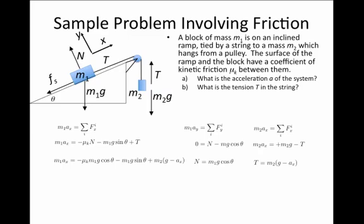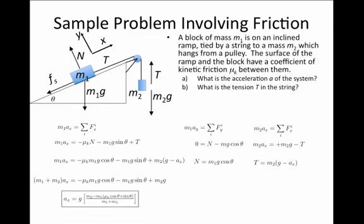Now we have, in this expression, everything is known except for the acceleration a. We can move terms with a over to the left-hand side of the equation. We have M1 plus M2 times a equals all the stuff on the right-hand side. And this allows us to solve for a.